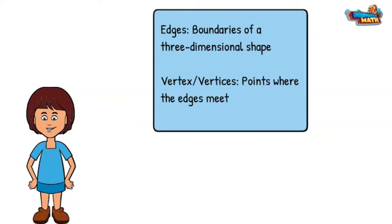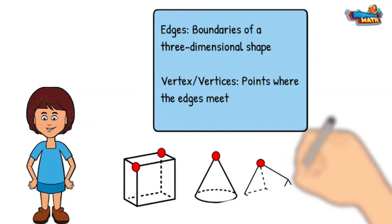These straight edges meet at points called vertices. The red dots represent some of the vertices on the various shapes.